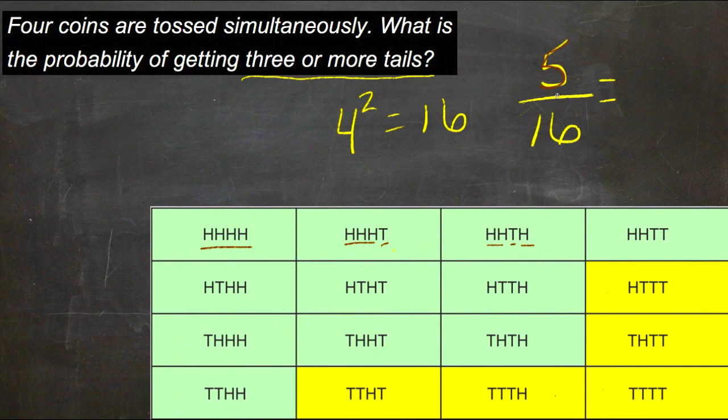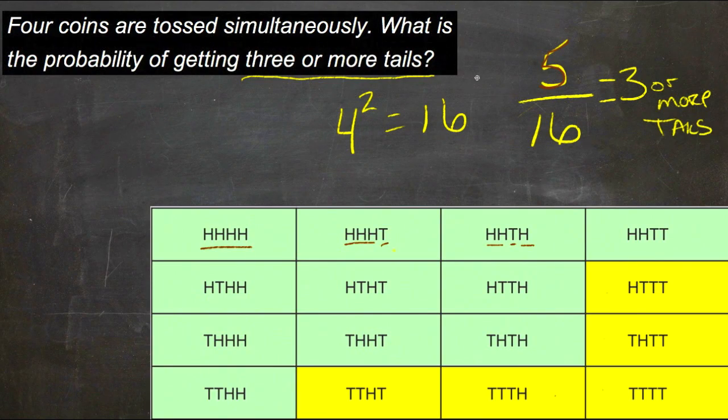Five-sixteenths is our chance of getting three or more tails.